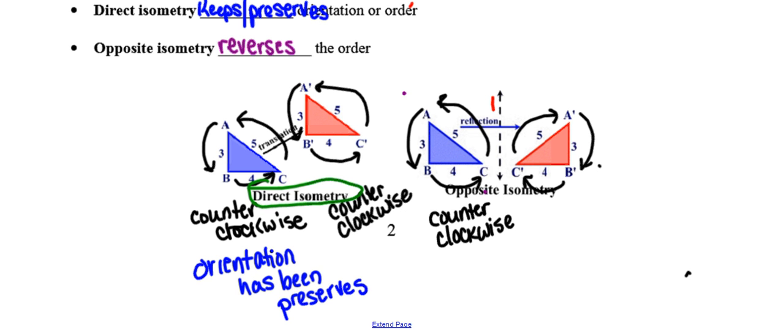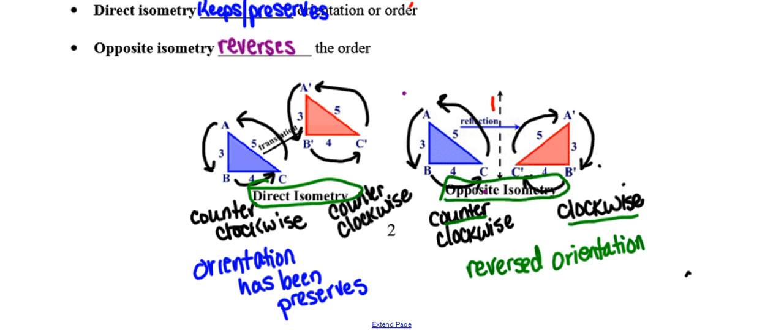So because in the pre-image, we had counterclockwise, and that orientation has been reversed or changed to be clockwise in the image, we say that orientation has not been preserved, or orientation has been reversed. And because the orientation has been reversed, that's what makes this transformation an opposite isometry.